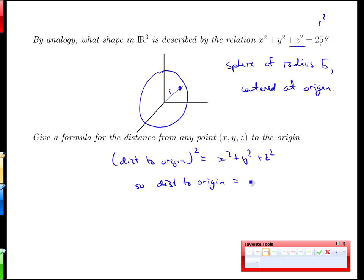So the distance to the origin of any point x, y, z is going to be the square root of x squared plus y squared plus z squared. That's going to be a complementary result that we're going to use going forward in the course, just comes nicely out of the sphere definition.